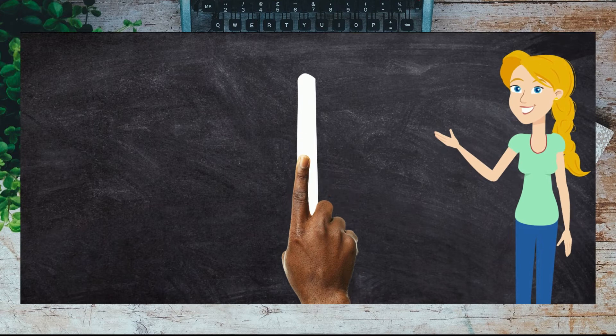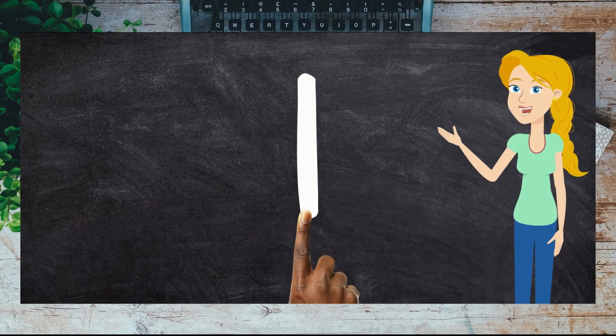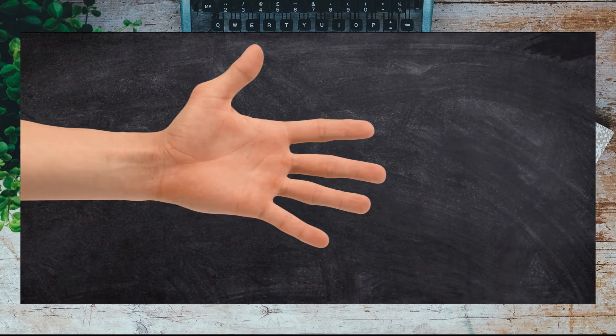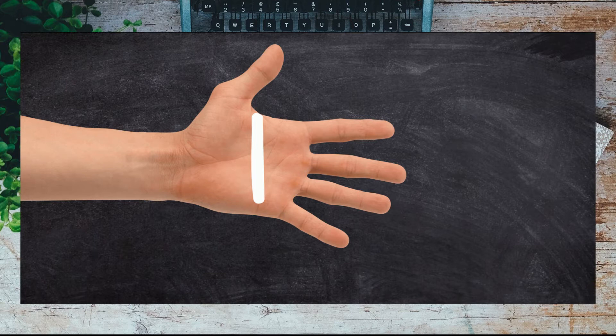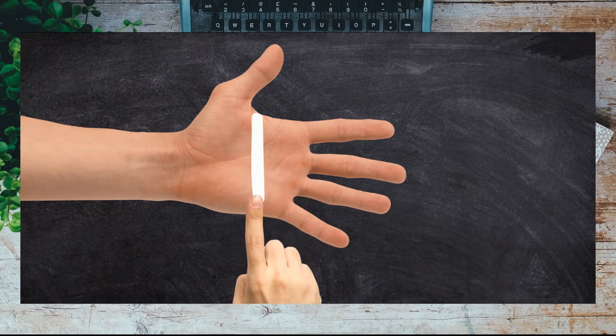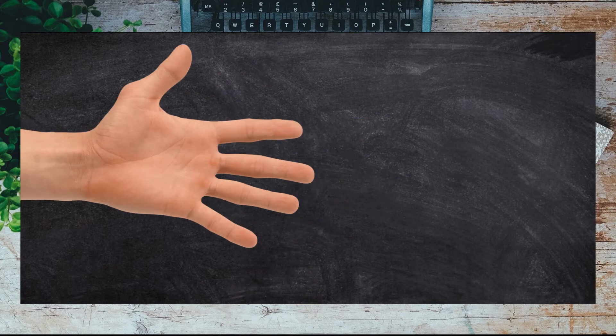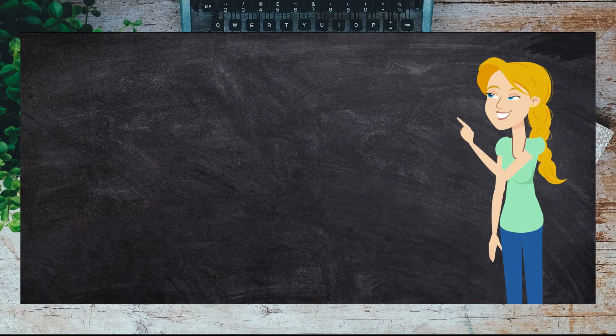Great work! Let's have a go at writing on your palm now. Start at the top and draw a straight line down. You can also write the word one using letters: O-N-E spells one.